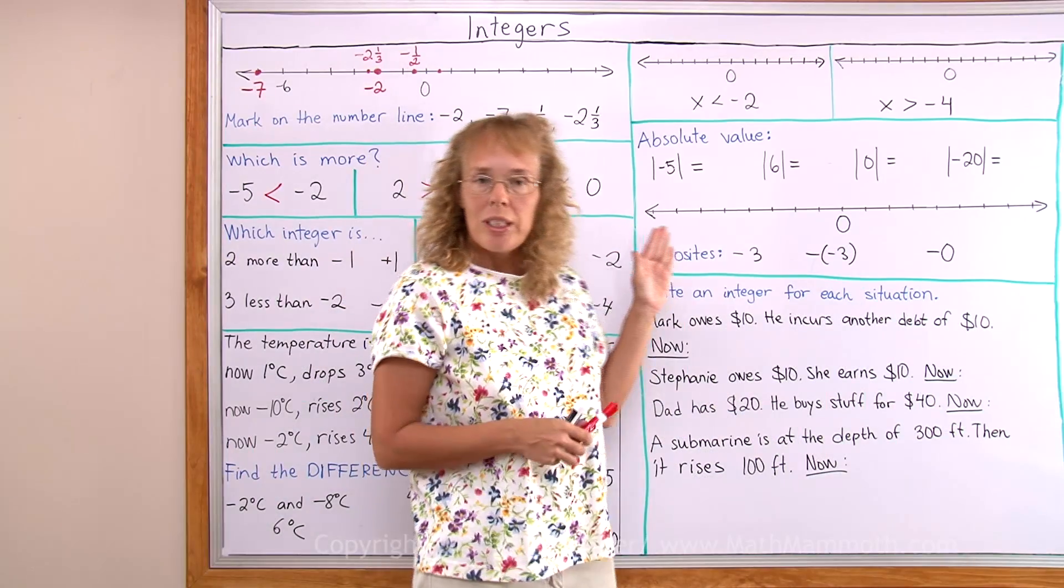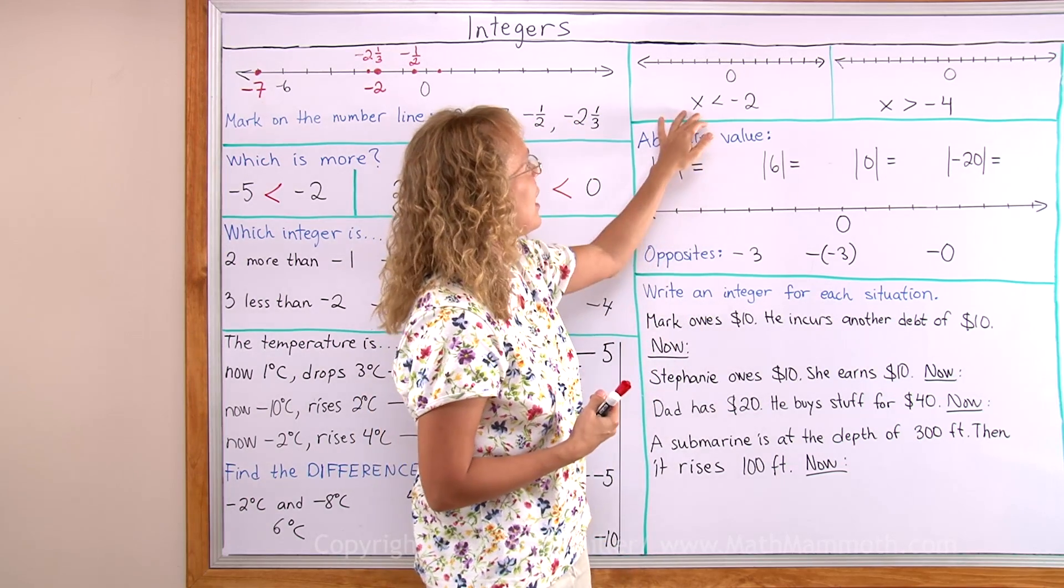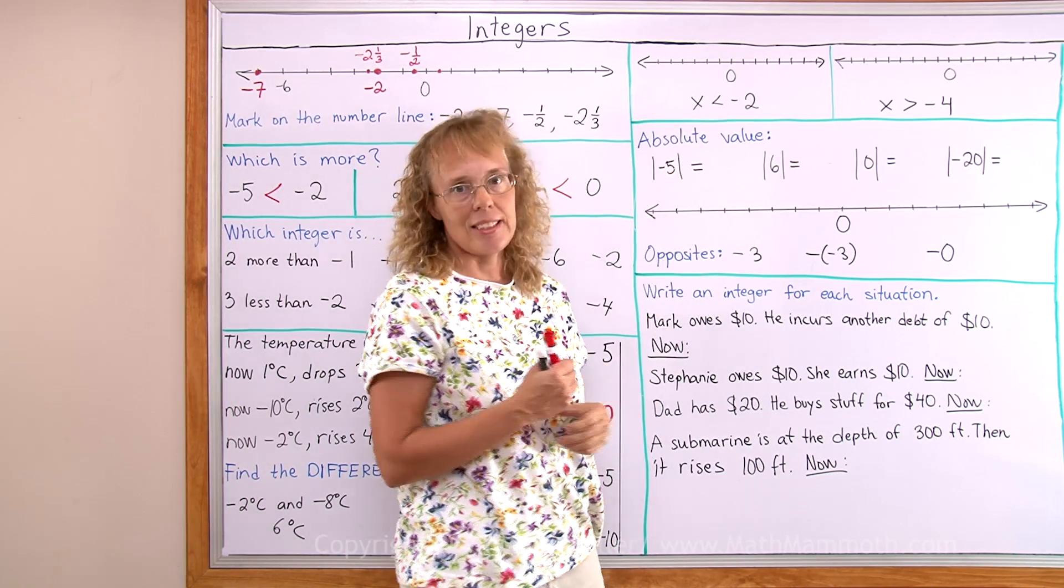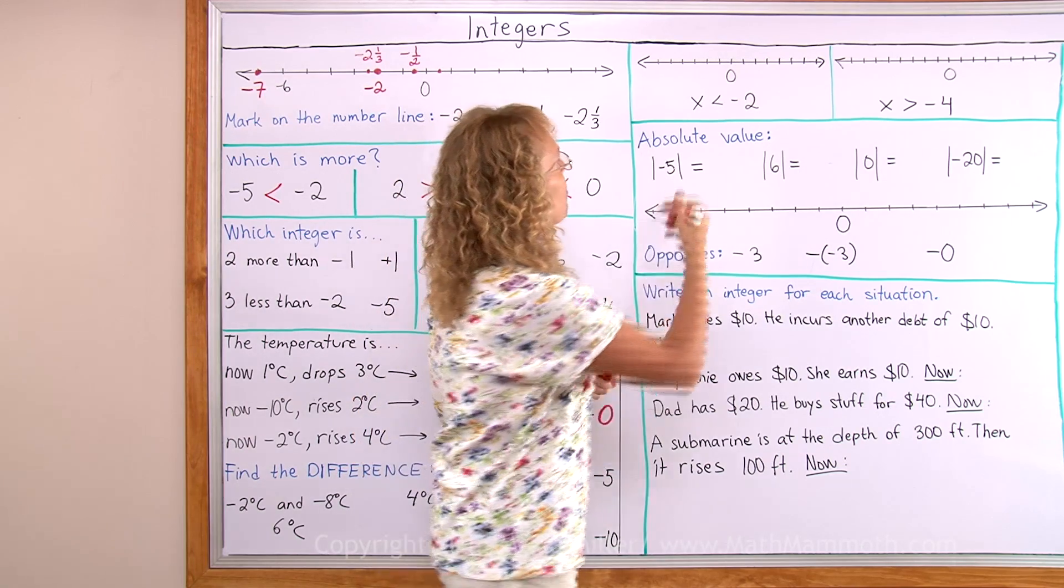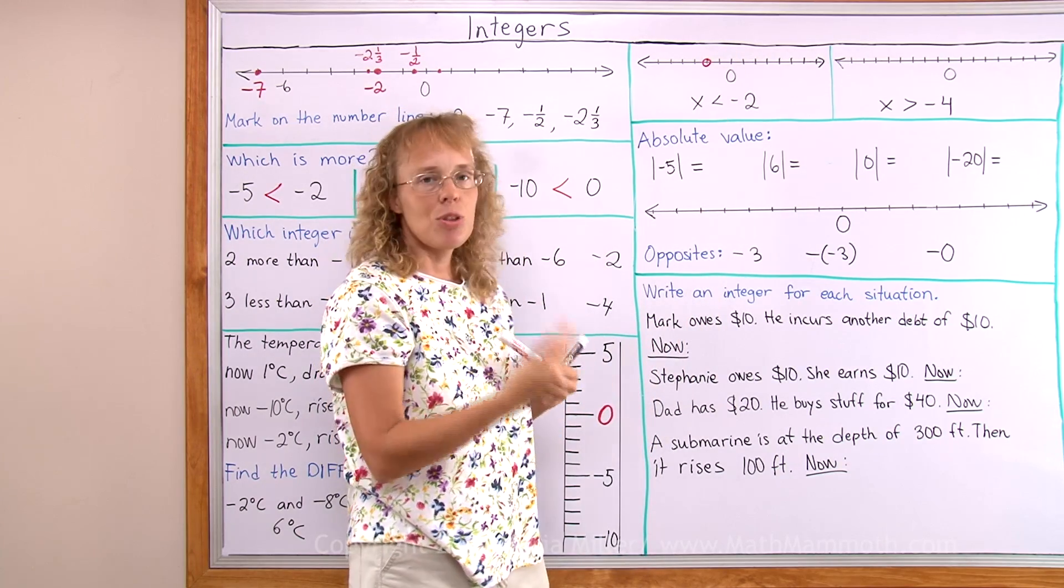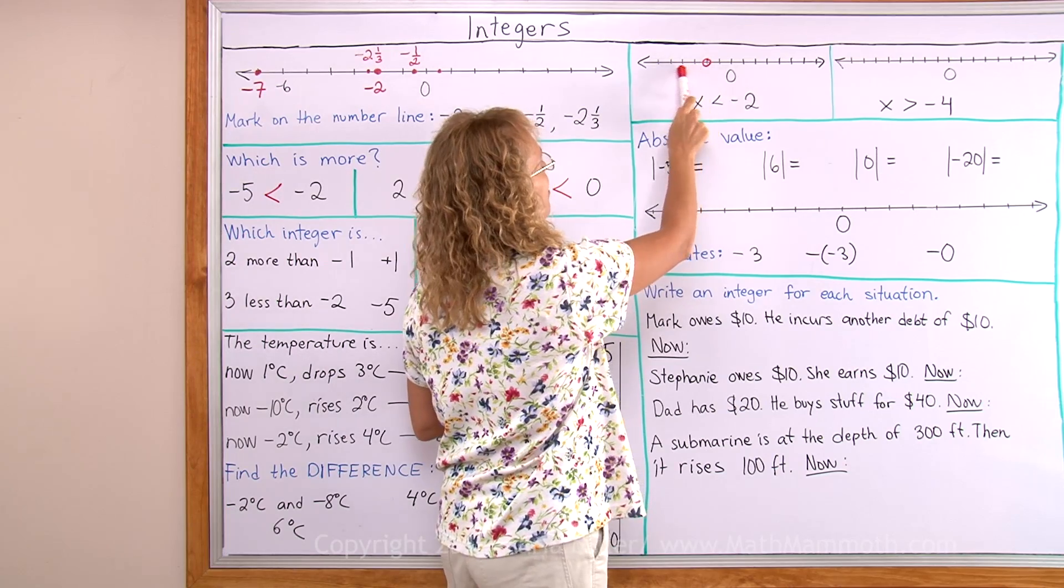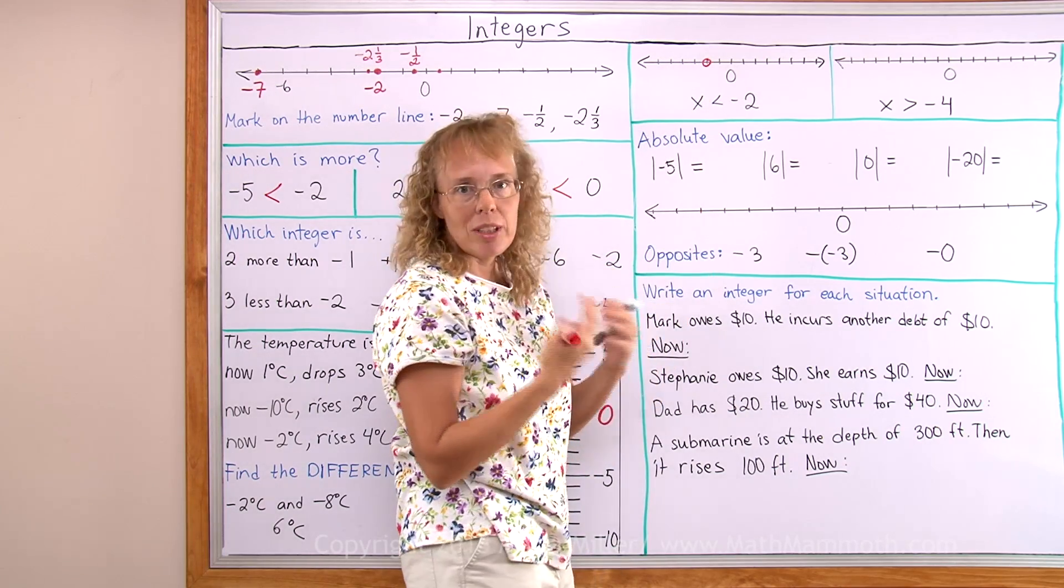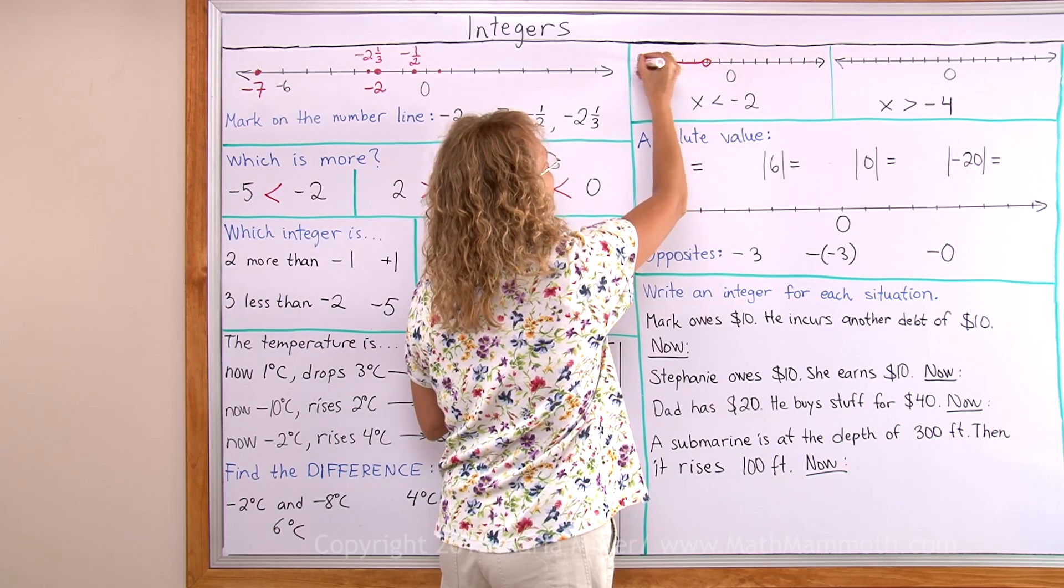Here I have two inequalities. And we are going to plot them on the number line. x is less than negative 2. First I will find negative 2, which is here. And now x is less than negative 2 means it is anything less than negative 2. Any number smaller than negative 2. Or any number that is more in debt. More negative. So it is all these numbers towards there.